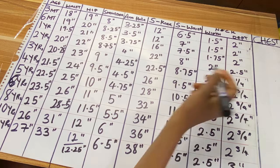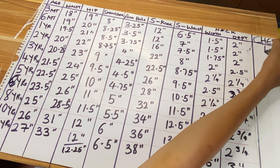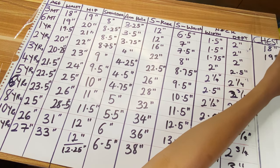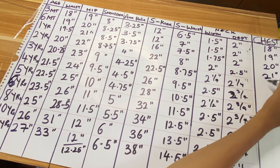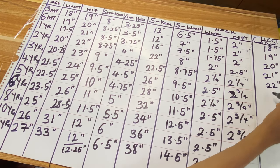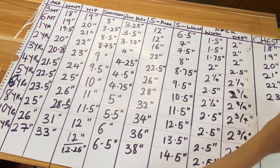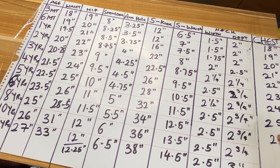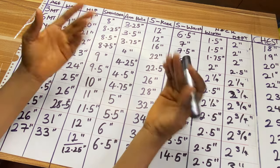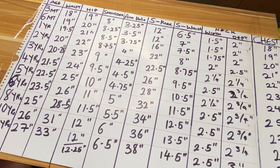The next measurement is chest or bust. For three months 18 inches, six months 19 inches, one year 20 inches, two years 21 inches, three years 22 inches, four years 23 inches, five years 24 inches, six years 25 inches, eight years 27 inches — for seven years use 26 inches. For ten years 29 inches, for eleven years 30 inches, and twelve years 31 inches.